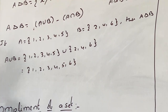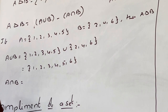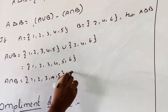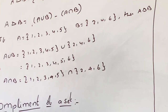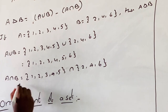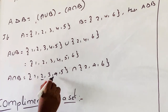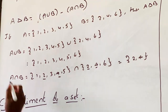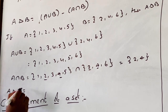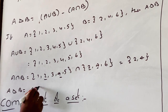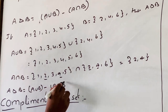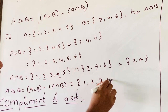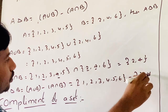Now, A union B is {1, 2, 3, 4, 5, 6}. Next, A intersection B: {1, 2, 3, 4, 5} intersection {2, 4, 6} equals {2, 4}. So A delta B equals A union B minus A intersection B, that is {1, 2, 3, 4, 5, 6} minus {2, 4}.